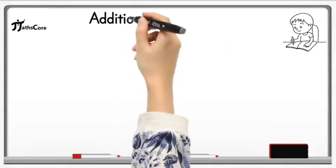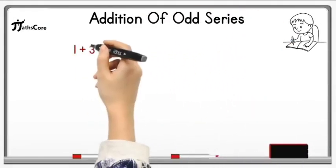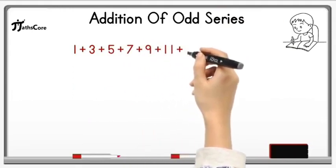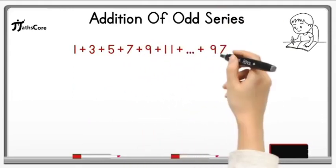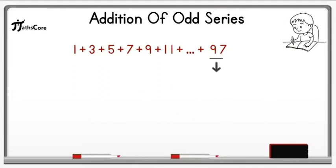Let's take one more example on this technique. Example is 1 plus 3 plus 5 plus 7 plus 9 plus up to 97. So the last number of this series is 97.